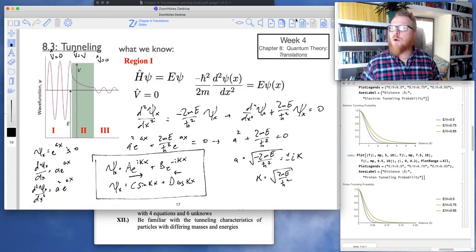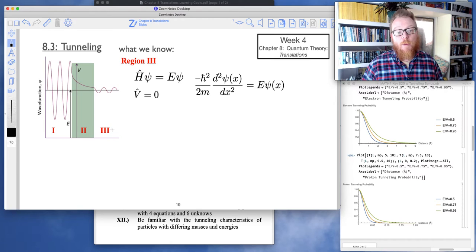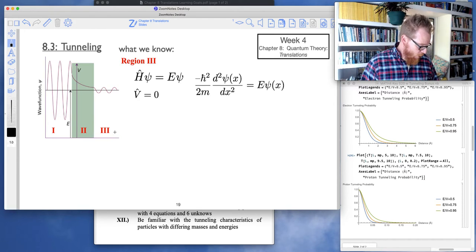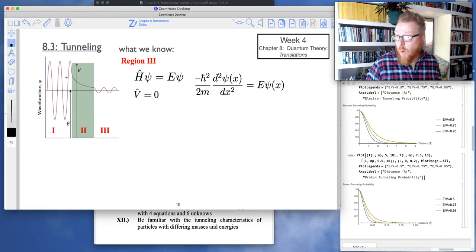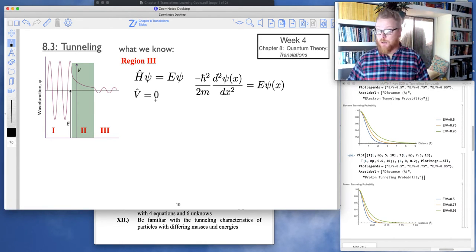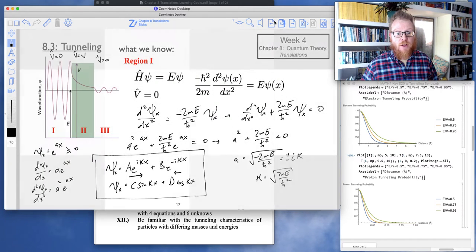to their particle counterparts. And then finally, what we know about the region three solution—well, it's very similar to the region one solution because potential energy is equal to zero. We have the same situation of kinetic energy, so basically I'm just going to write directly, you know, follow this region one solution. It's going to work out identically.